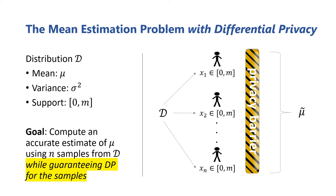Requiring the constraint of differential privacy simply adds this conceptual privacy barrier that all the user's data must pass through in order to generate the mean estimate. The way that the privacy barrier functions strongly depends on the underlying trust model used. However, what it means for a mechanism — or in this case, for an estimator — to satisfy differential privacy remains the same across all trust models.